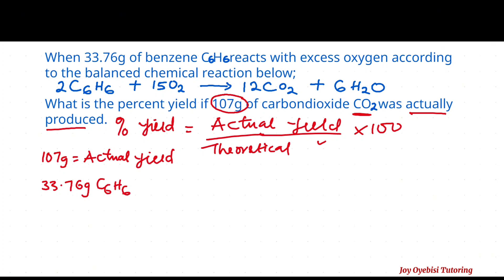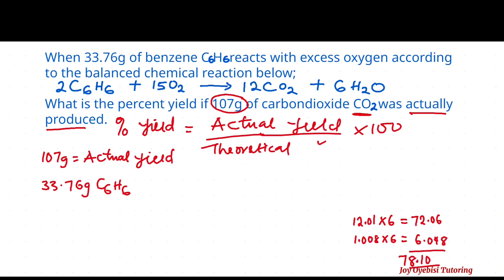In order to find the theoretical yield of carbon dioxide, we need to convert the grams of benzene to moles of benzene first. To do that you need the molar mass of benzene. The molar mass of benzene: carbon is 12.01 times 6, and hydrogen is 1.008 times 6. So 12.01 × 6 = 72.06, and 1.008 × 6 = 6.048. Adding those together gives us 78.108 grams per mole.